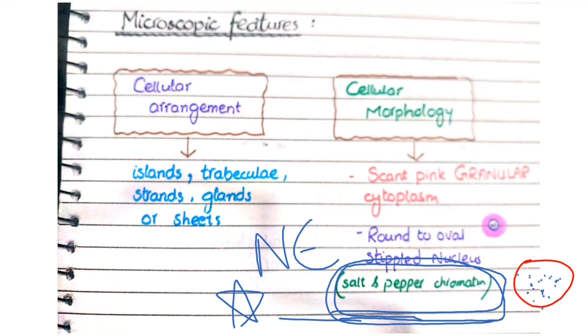As far as cellular arrangement was concerned, it was arranged in islands, trabecular strands, glands, or sheets. According to cellular morphology, they have pink granular cytoplasm with round to oval stippled nuclei. This appearance is also known as salt and pepper chromatin.